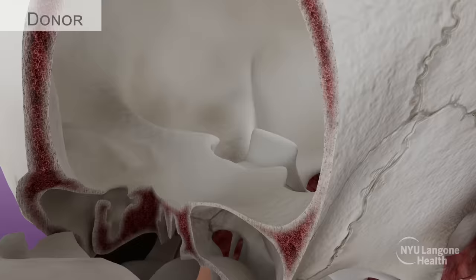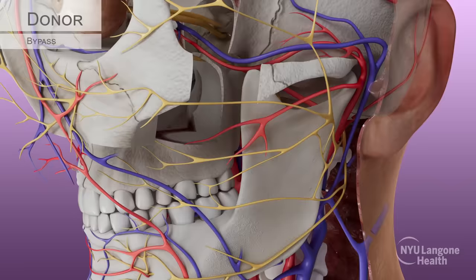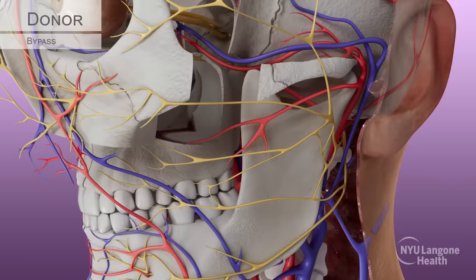A previously freed superficial temporal artery and vein were then rotated into the posterior orbit and anastomosed to the ophthalmic artery and vein, functionally creating a bypass to maintain perfusion to the globe and its surrounding structures.